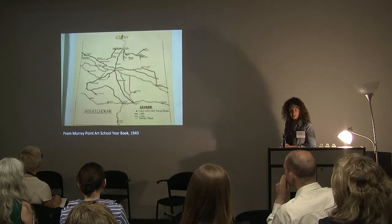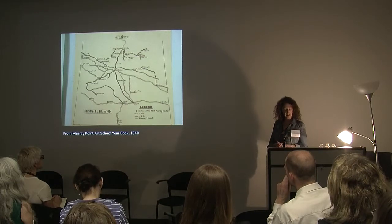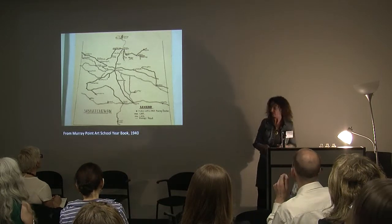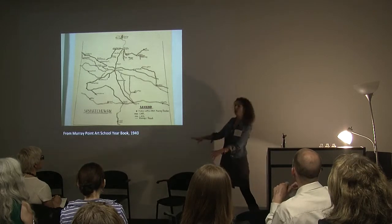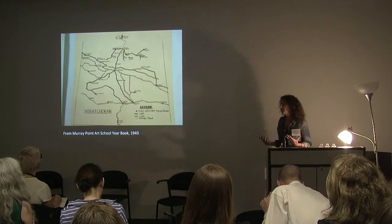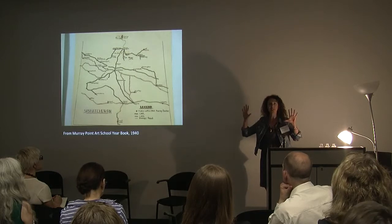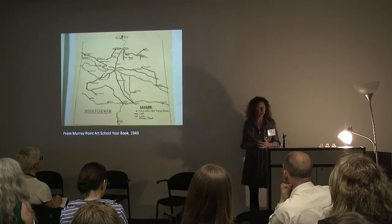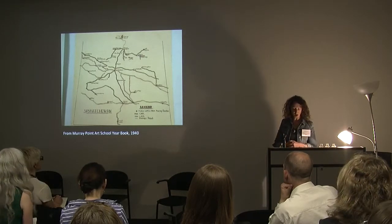Emma Lake is located in what is considered to be northern Saskatchewan, but it is in fact much closer to the geographic center of the province. The population in Saskatchewan, like the rest of Canada, is pressed up against the glass of the United States and compressed into urban centers. But there are people in the north, and no less than 100,000 lakes, of which Emma is one.